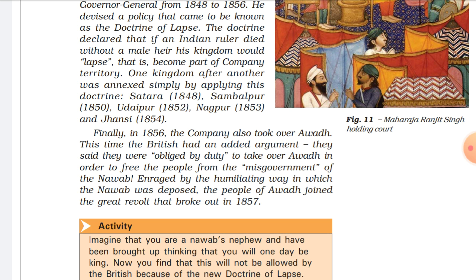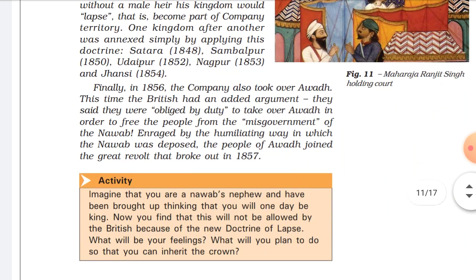When Awadh was annexed, the Britishers spread a rumor that Awadh was ruled by bad Nawabs — that the Nawabs were not ruling Awadh well. So the Britishers showed themselves as justified, claiming there was misgovernment in Awadh and that they needed to annex it. But that was a completely false rumor.